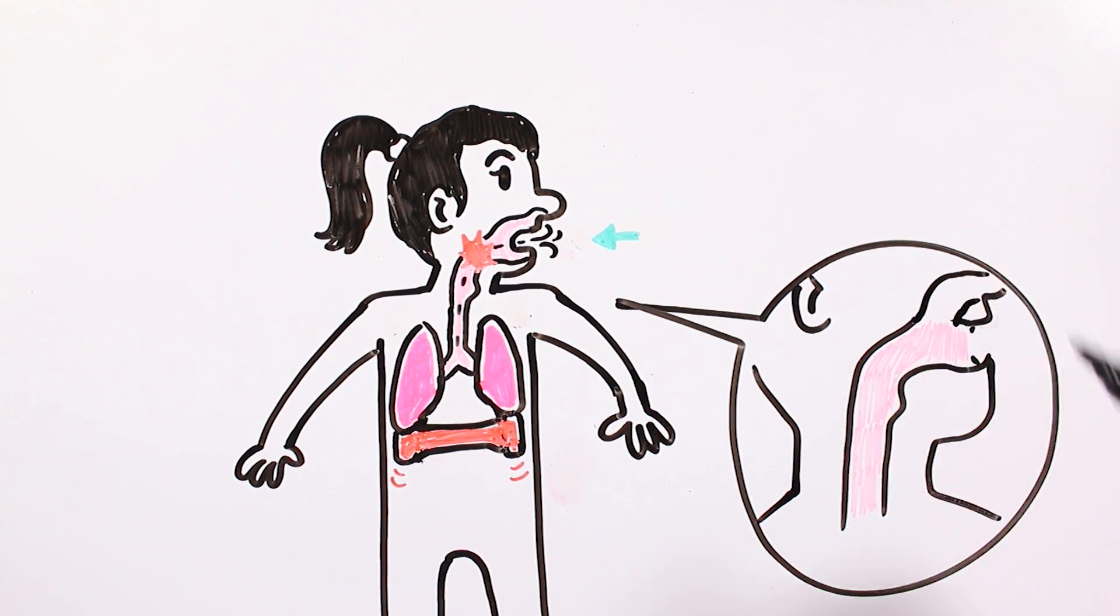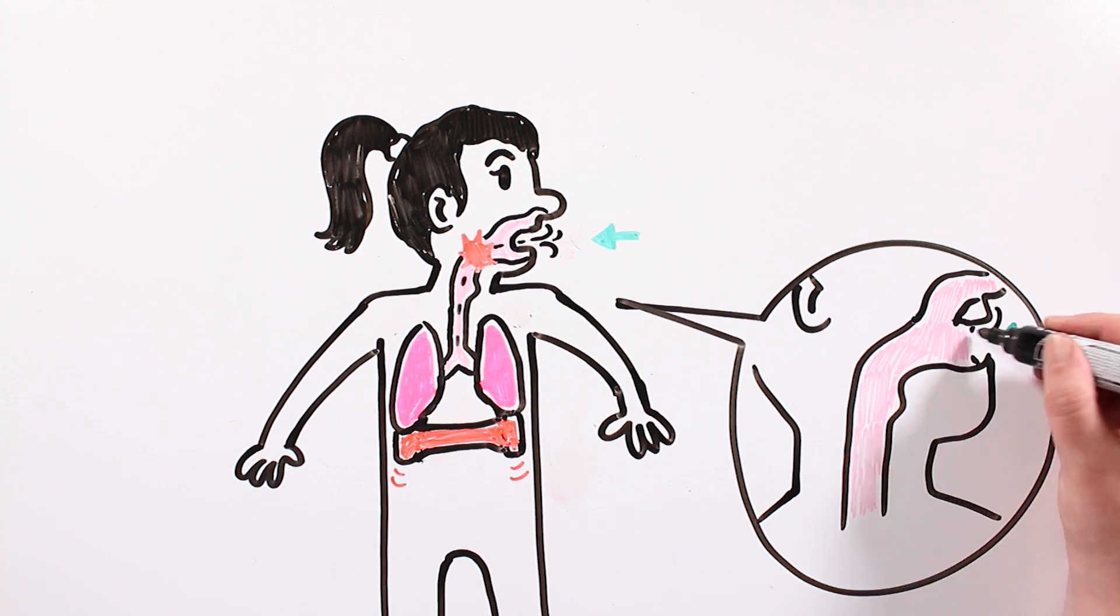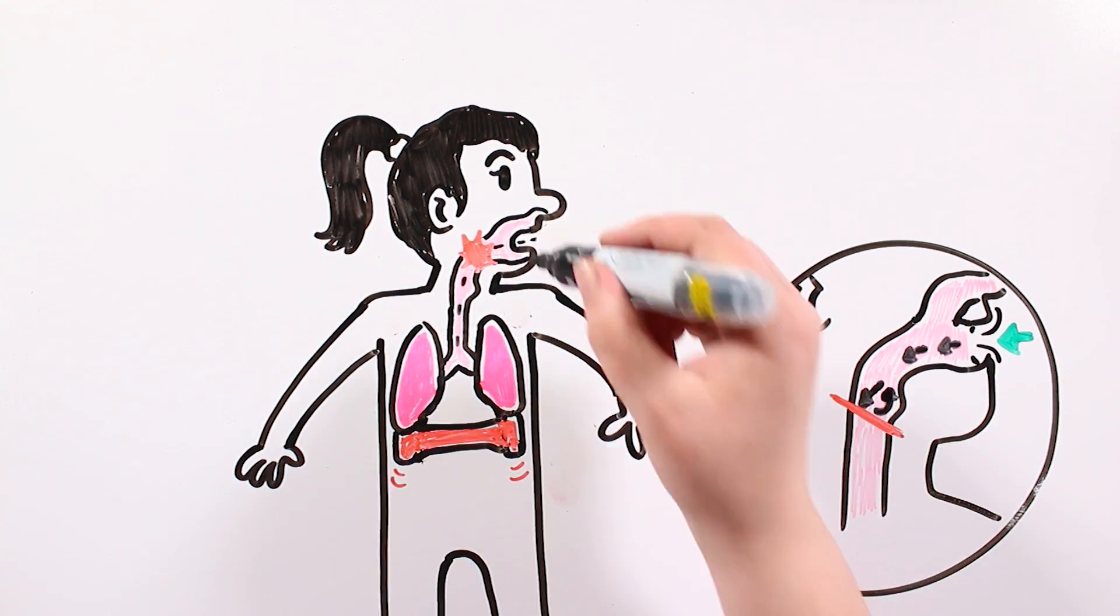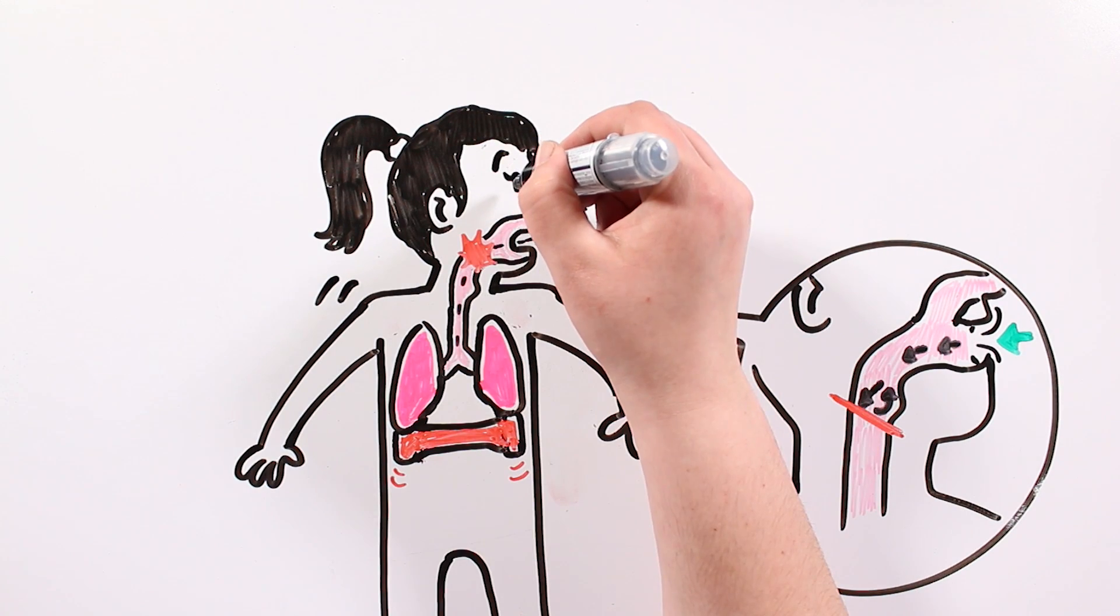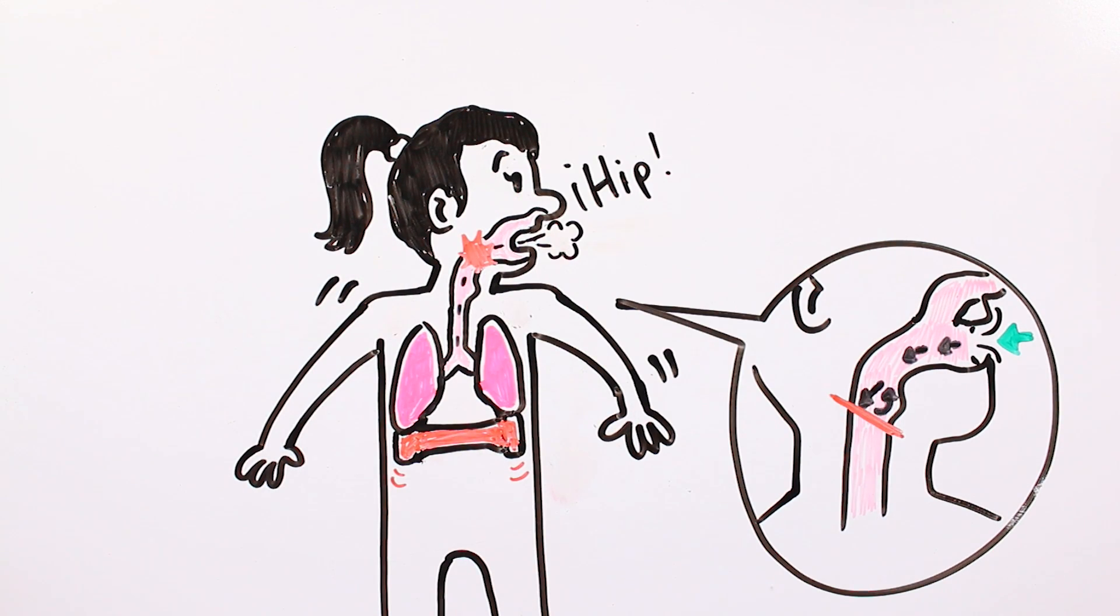When the air coming into the throat suddenly hits the larynx, the vocal cords suddenly close, and we make that peculiar sound, accompanied by an uninterrupted and violent breathing.